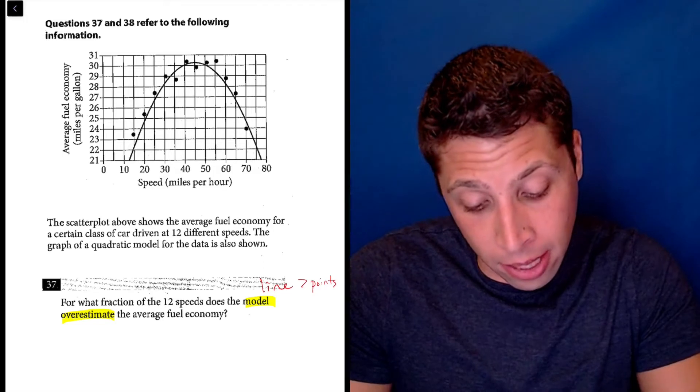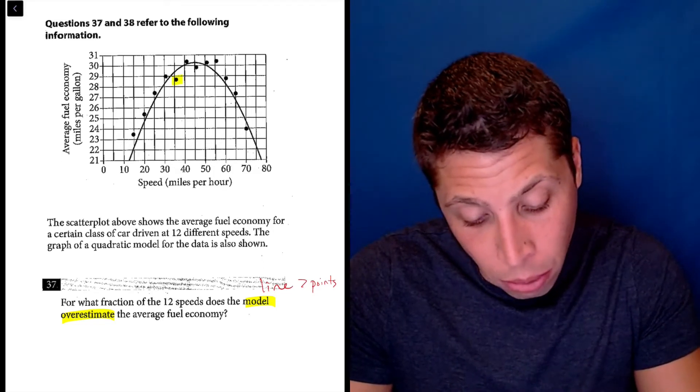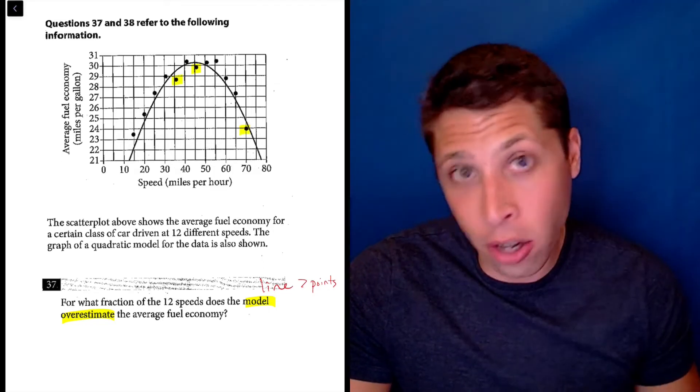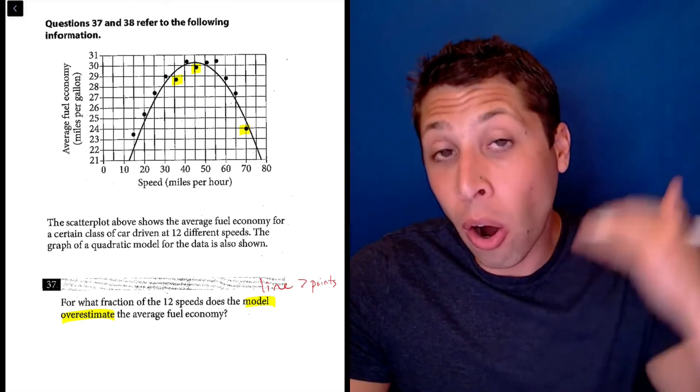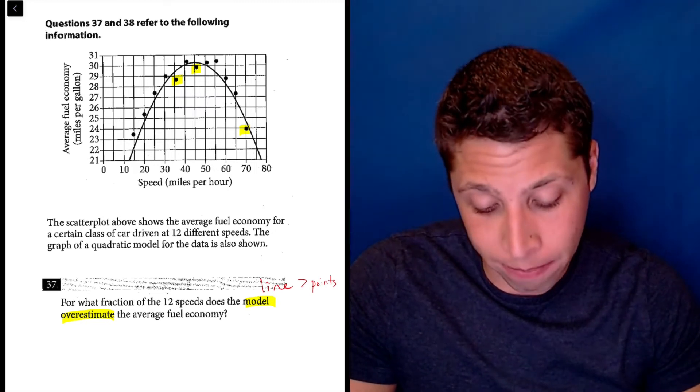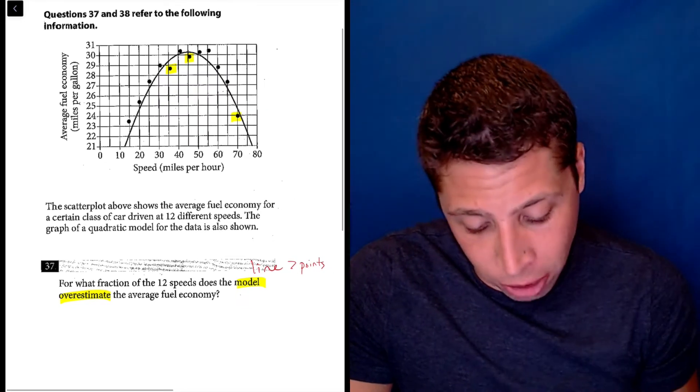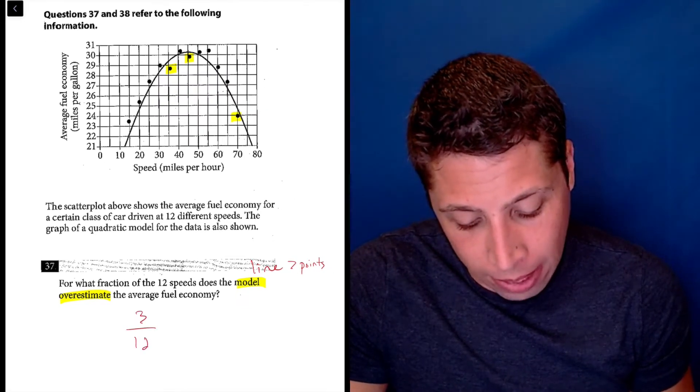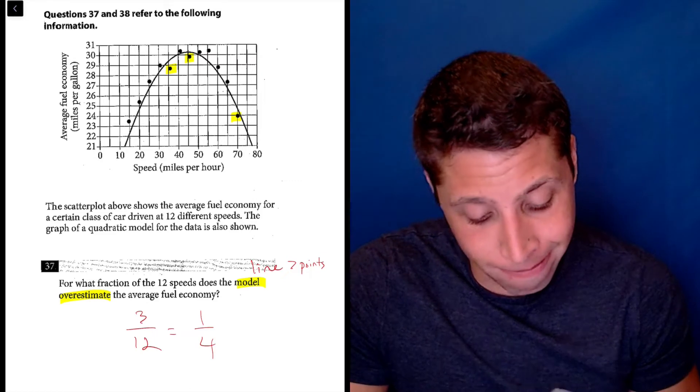So I see one, two, three points that are under the line. So the line is over, literally over the point, over the data. So let's just write that as a fraction. That's three out of 12, and that reduces to one-fourth. And that's the whole thing.